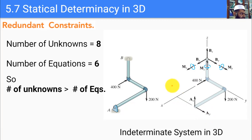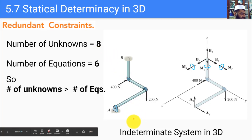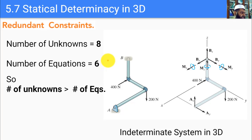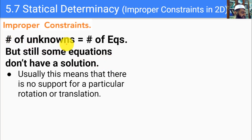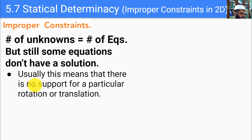That was the first type of indeterminacy — statistical indeterminacy where the number of unknowns is greater than the number of equations. But there is another possibility: the number of unknowns equals the number of equations, yet some equations still have no solution for equilibrium because the support is not provided in a particular direction of rotation or translation.